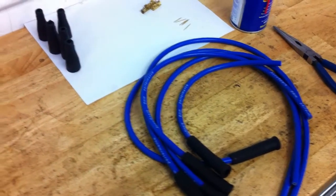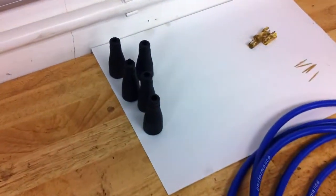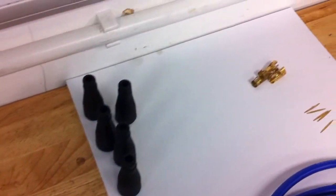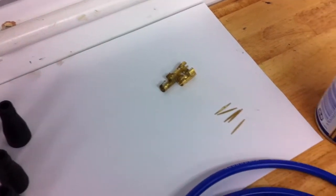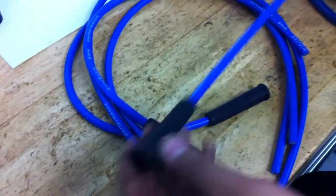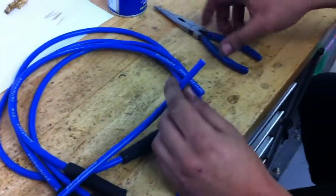When you get your leads you'll notice in the bag you'll also receive five distributor end boots, five contacts and five spikes. The spark plug ends are already fitted so all we need to do now is cut the lead to length and fit the distributor end.